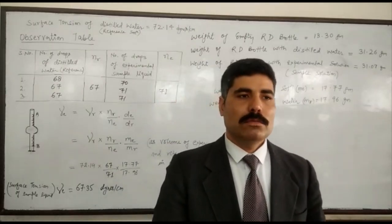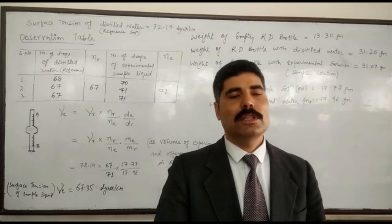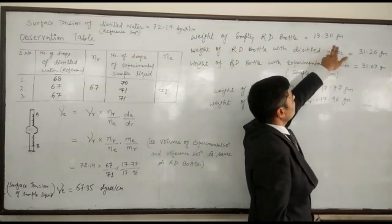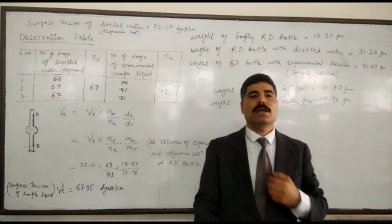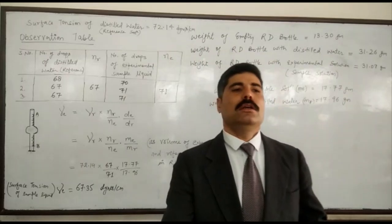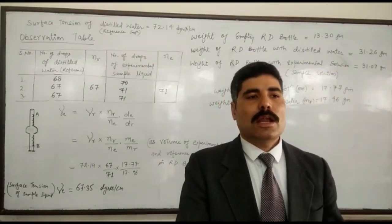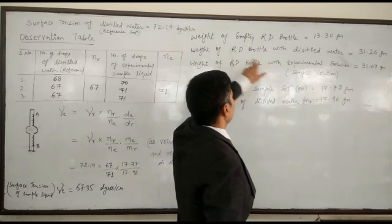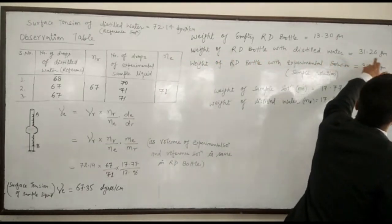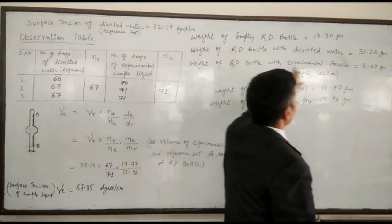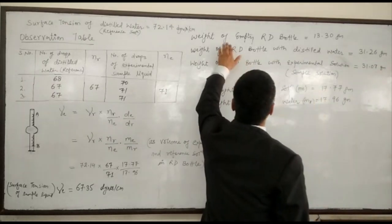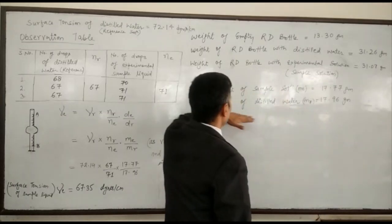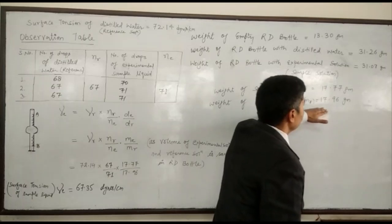The relative density is measured by first weighing the empty RD bottle on a chemical balance. The weight of the empty RD bottle is 13.30 grams. Then the weight of the RD bottle with distilled water is 31.26 grams, and the weight of the RD bottle with the experimental solution is 31.07 grams. Subtracting the weight of the empty RD bottle gives us the weight of the sample solution and the weight of distilled water separately.